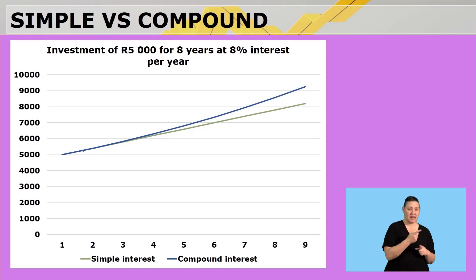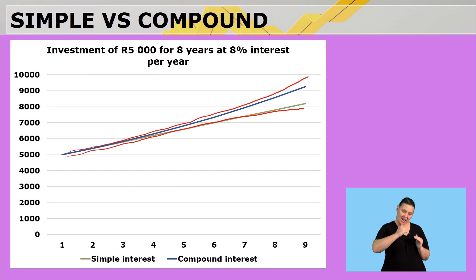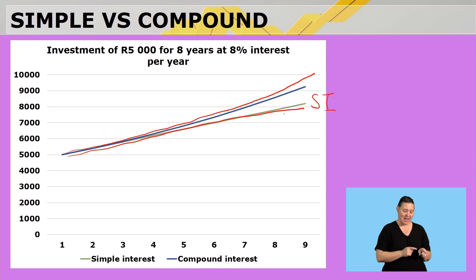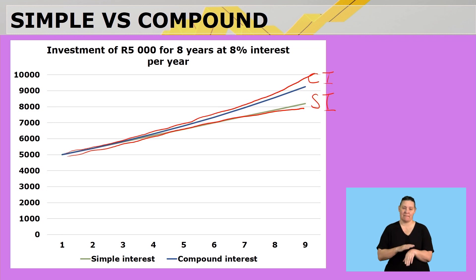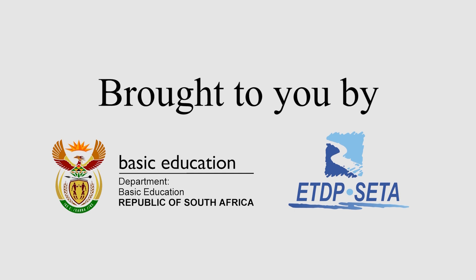If we look at it on a graph, the green graph represents simple interest because it has constant growth, while the blue graph represents compound interest because it grows exponentially. If the graph were shown over longer time periods, you would see it making a pronounced curve. And that brings us to the end of today's lesson. I hope to see you next time — enjoy the rest of your day. Bye.